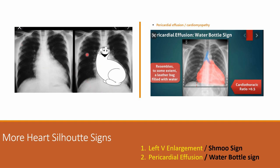Two more heart signs. First, we can see this cartoon figure — the schmoo sign. This represents left ventricular enlargement. When you see this bulging of the left border, you know the left ventricle — which forms the left ventricular aspect of the left border — is enlarged. This bulging is depicted as the schmoo sign.